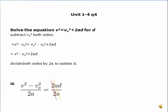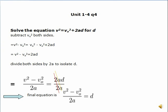You can see that the 2a cancel out the 2a down here. Now, the final equation is v-squared minus v-initial squared all over 2a equals d.